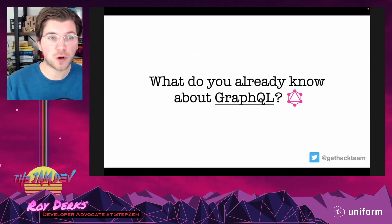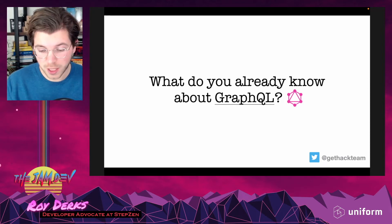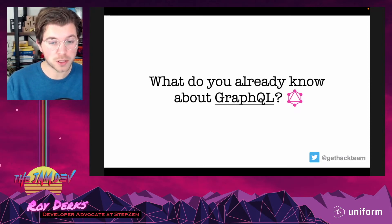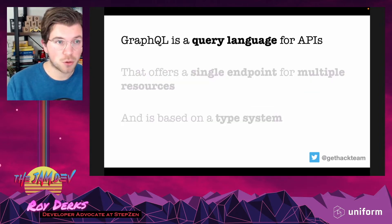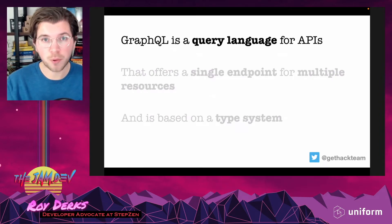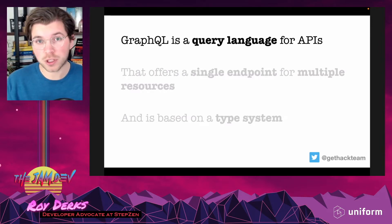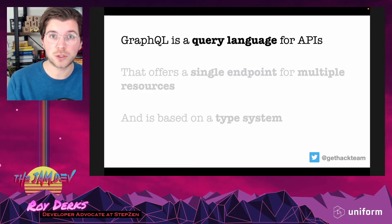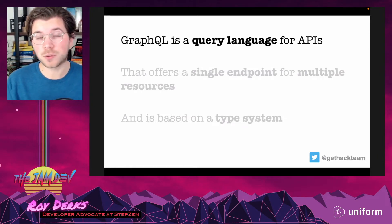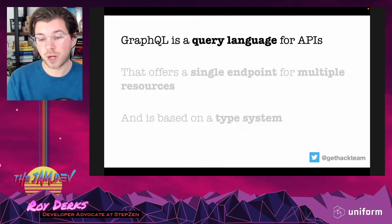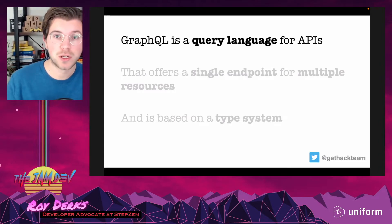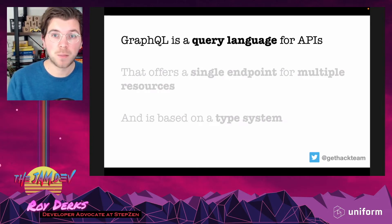Before diving into how to create a GraphQL API, let's have a short look at what GraphQL actually is. GraphQL is a query language for APIs — it's important to keep stating that, because people often think GraphQL is a framework on its own or a technology tied specifically to JavaScript. It is usable in JavaScript, but it's platform agnostic. GraphQL itself is not directly tied to any language.